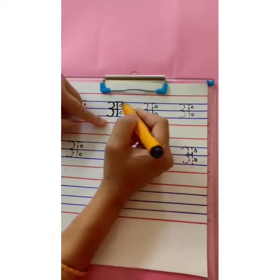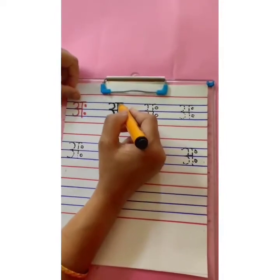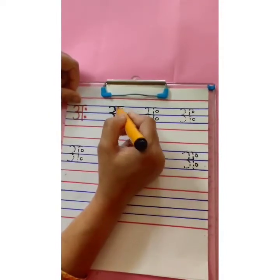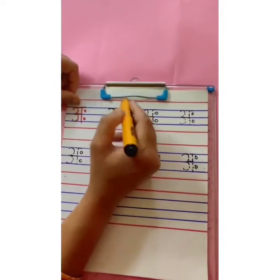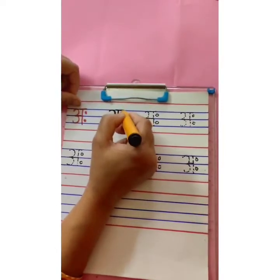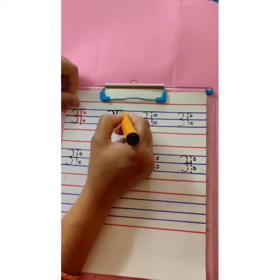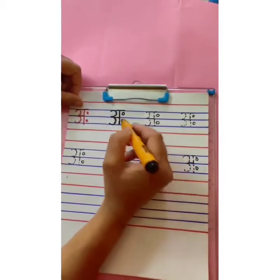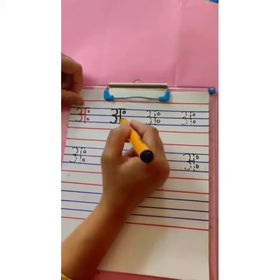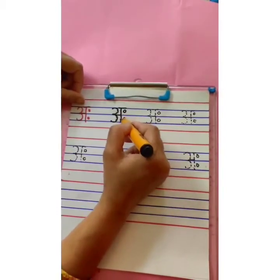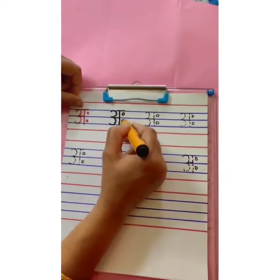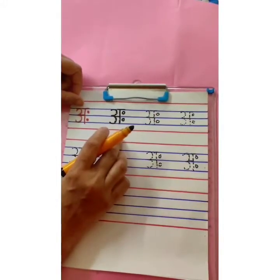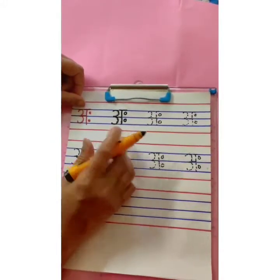This looks like Aha. And then we are going to give two dots beside the standing line — one between the first and second blue line, and another between the second and third blue line. Aha. This is Aha.